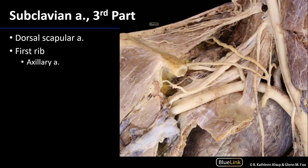Last but not least, from the third part of the subclavian artery, we have the dorsal scapular artery. It runs over and then medial to the scapula, supplying the levator scapulae as well as the rhomboid minor and major muscles with blood. As noted, this dorsal scapular artery sometimes arises from the transverse cervical artery instead.